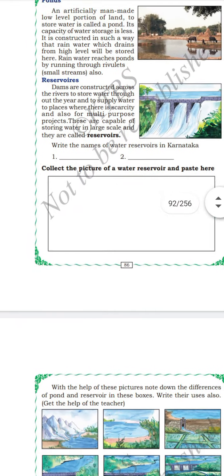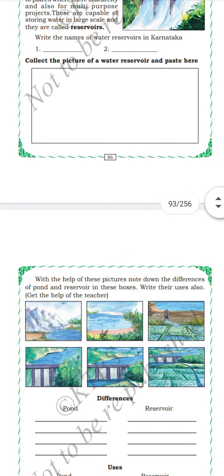Collect some pictures of a reservoir and try to paste them. Using the pictures we can find out which is a pond and which is a reservoir. A pond is a small piece of land mainly used to collect rain water, but reservoirs are big structures constructed against a flowing river to store large amounts of water.